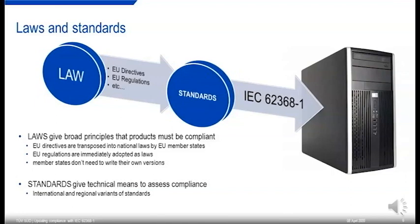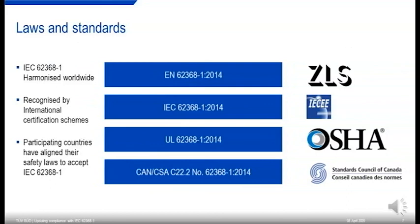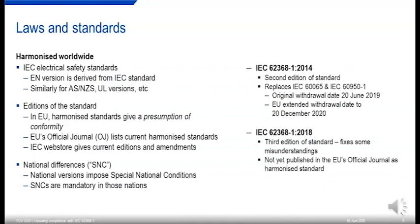IEC 62368-1 is the international version of the standard on which all other national standards are based. IEC standards are harmonized worldwide by countries that are part of the international certification schemes. Harmonized means that countries have aligned their product safety laws so that the IEC standard is agreed to meet those requirements. You can see the EN 62368-1, IEC, UL, and Canada CSA versions — all based on the IEC version.